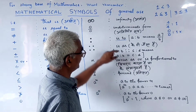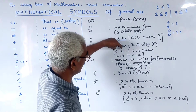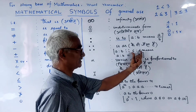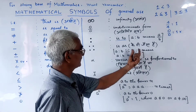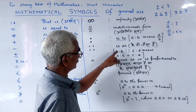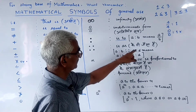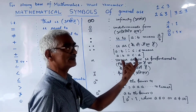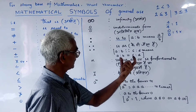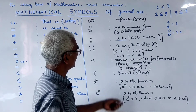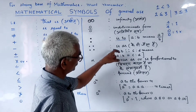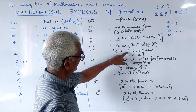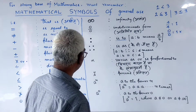This proportion symbol means that a ratio on the left side is equal to the ratio on the right side. So this ratio is like this ratio — both ratios are equal to each other.